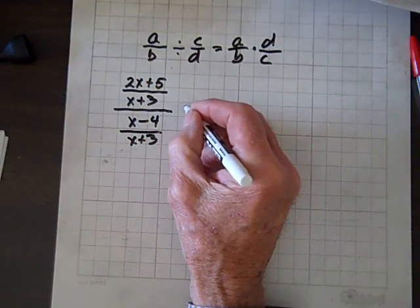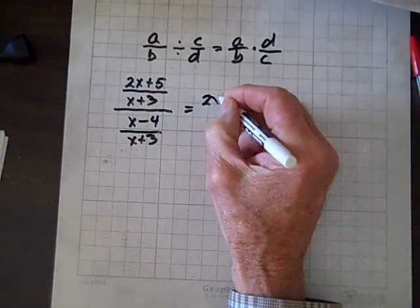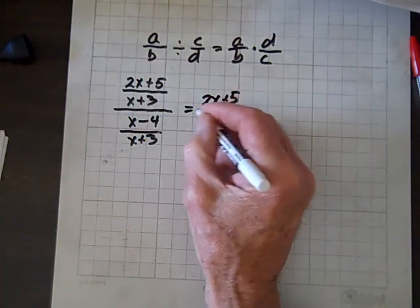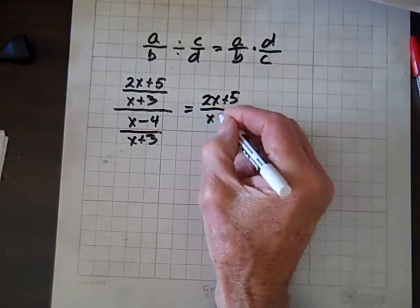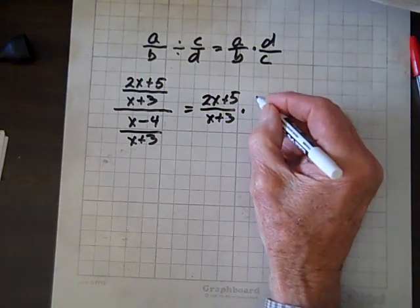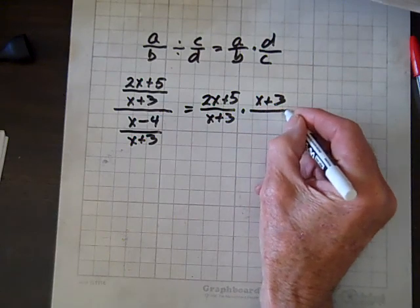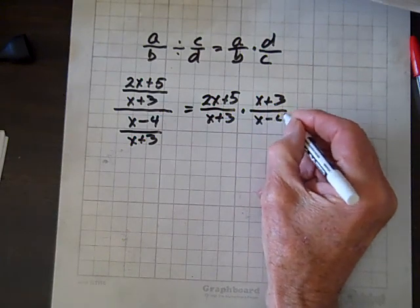According to this, we invert and multiply. So we get (2x+5)/(x+3) times (x+3)/(x-4).